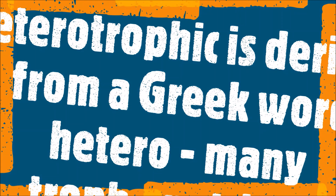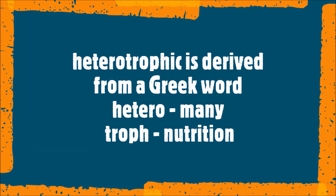Heterotrophic mode of nutrition: the term 'heterotrophic' means hetero — many, and trophe — nutrition. It is the kind of nutrition in which an organism cannot produce its own food and depends on other organisms for its food. This is called the heterotrophic mode of nutrition.